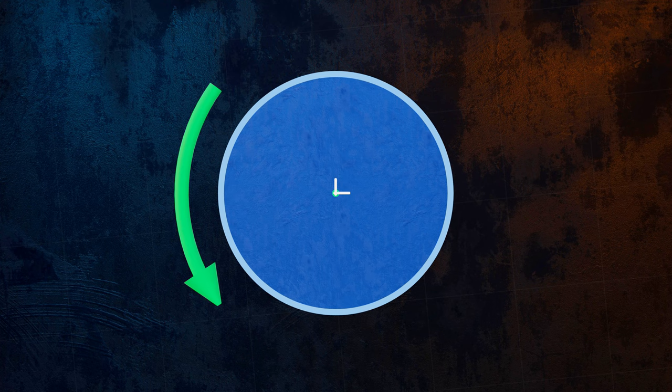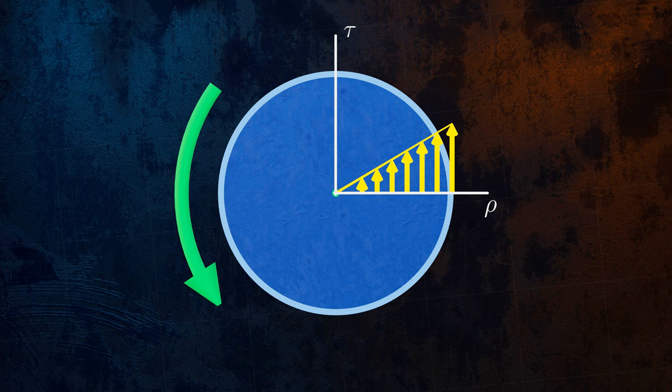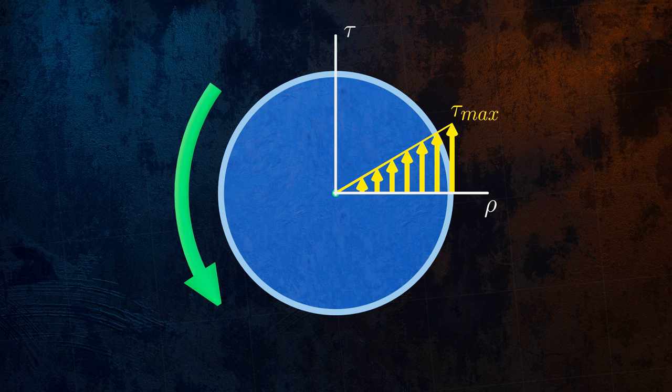Like the shear strains, shear stresses increase linearly with the distance from the center of the cross section, with the maximum shear stress occurring on the outer surface, as you can see here. This is true for a solid bar, but also for a hollow bar.